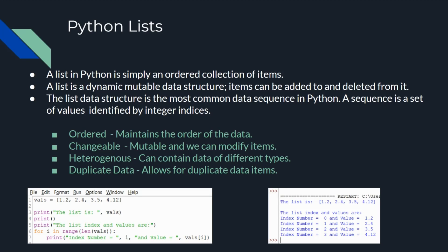Python uses lists, which are more general data structures that can be used to represent arrays. With an array, multiple values can be stored and each is referenced with the name of the array and specifying an index value. The individual values of an array are known as elements. A list in Python is simply an ordered collection of items, each of which can be of any type. A list is a dynamic mutable data structure, meaning items can be added to and deleted from it. The list data structure is the most common data sequence in Python.